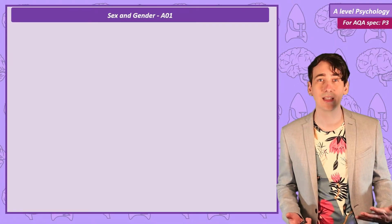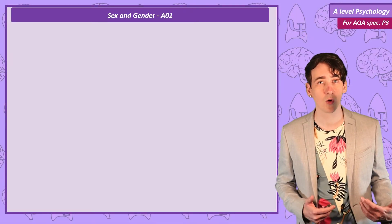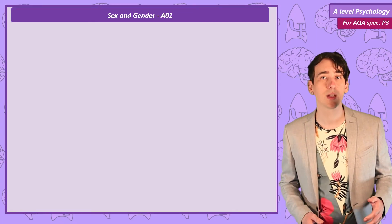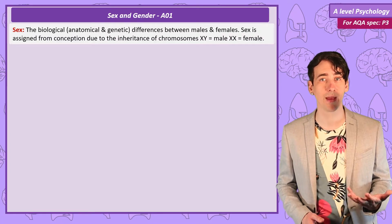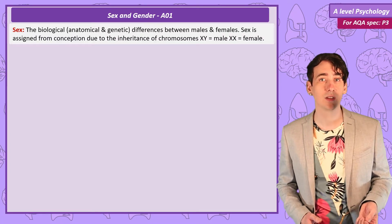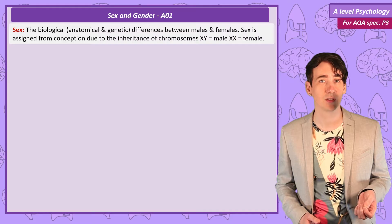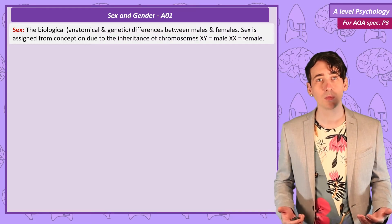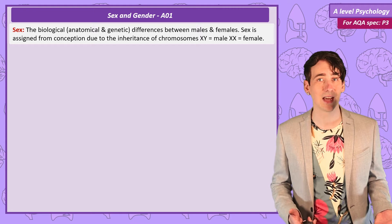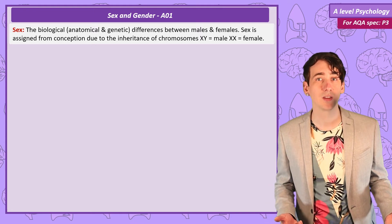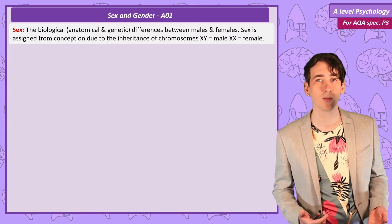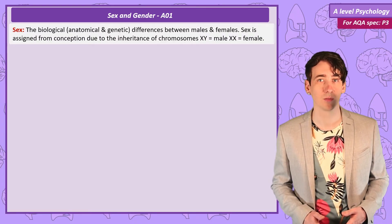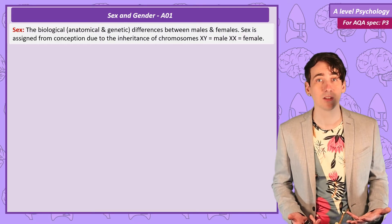Sex and Gender. When talking about sex and gender it's easy to get confused about which term is correct for a particular context. When psychologists use the term sex, what they mean is the biological differences between males and females. This is both the genetic differences and the anatomical differences. This means that biological sex is assigned to someone at the moment of conception, and this is due to inheriting either an XX sex chromosome for females or XY sex chromosome for males, but sex is actually assigned at birth.